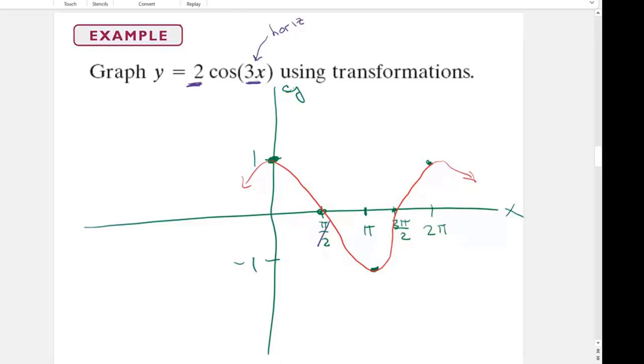So pi over two divided by three is pi over six. Pi divided by three is pi over three. Three pi over two divided by three is pi over two. Two pi divided by three is two pi over three. So now I have one cycle and it's actually just going from zero to two pi over three.